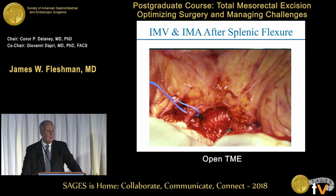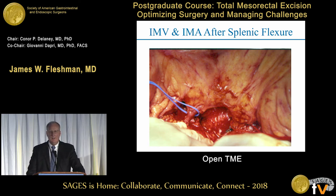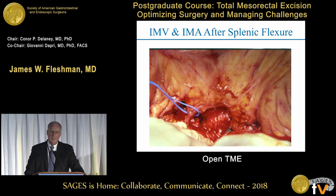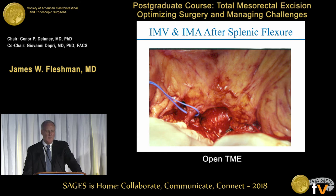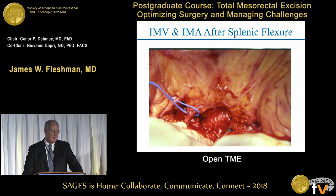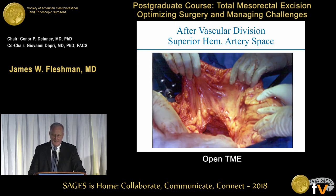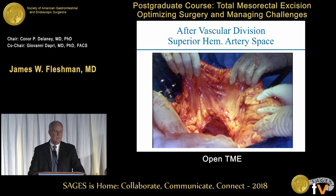If you have the IMV ligated at the undersurface of the pancreas, you have taken all of the lymphatics that could impact patient recurrence. The IMA at the origin will have nerves that affect ejaculation function in a male, and those nerves can either be dropped down, or the ligation can be done at a higher level close to the bifurcation of the left ascending colic artery and the superior hemorrhoidal artery, as opposed to right on the aorta itself. If you see an enlarged lymph node at the IMA, you should take it with your specimen — this is essentially what you do in a periaortic lymph node dissection. Once you've divided the IMA and IMV and mobilized the splenic flexure, you have a colon that will reach well out of the abdomen and can be moved all the way down into the pelvis for your anastomosis.